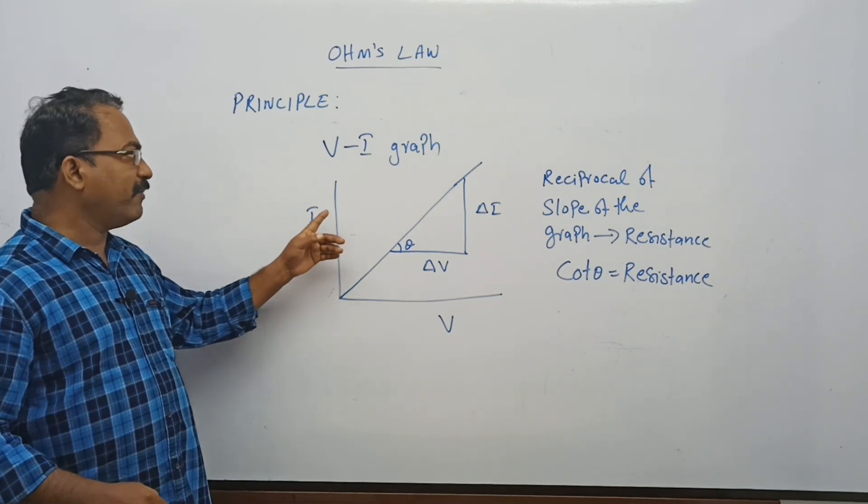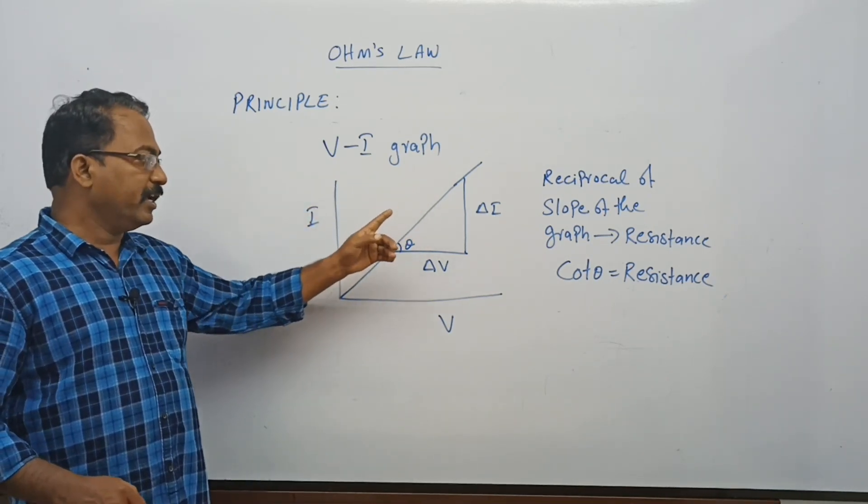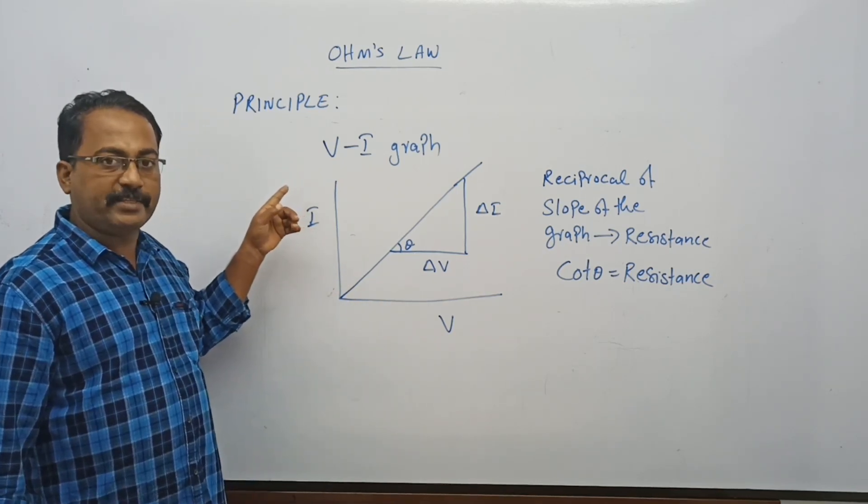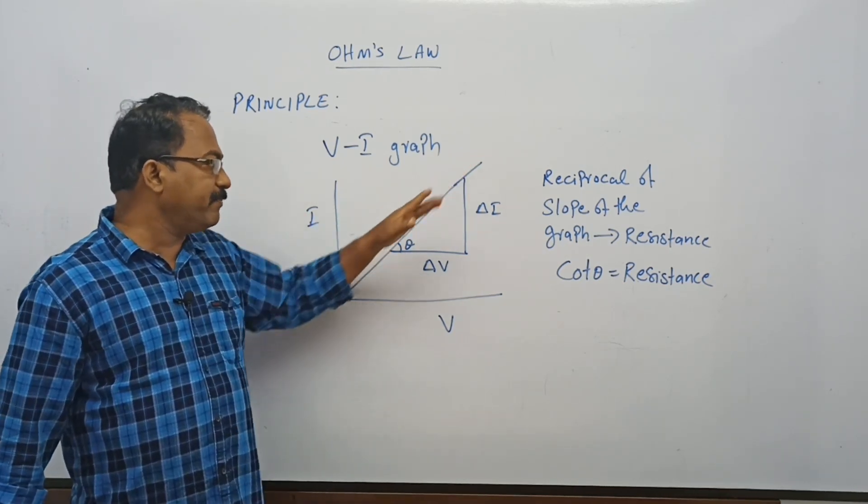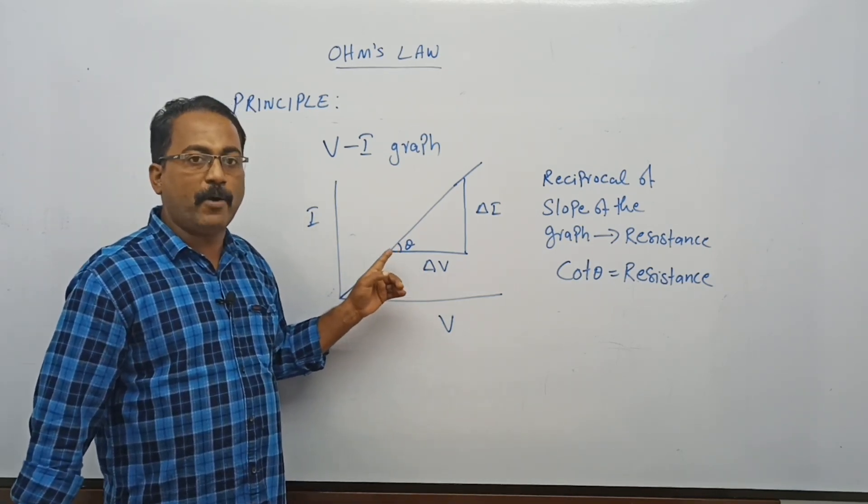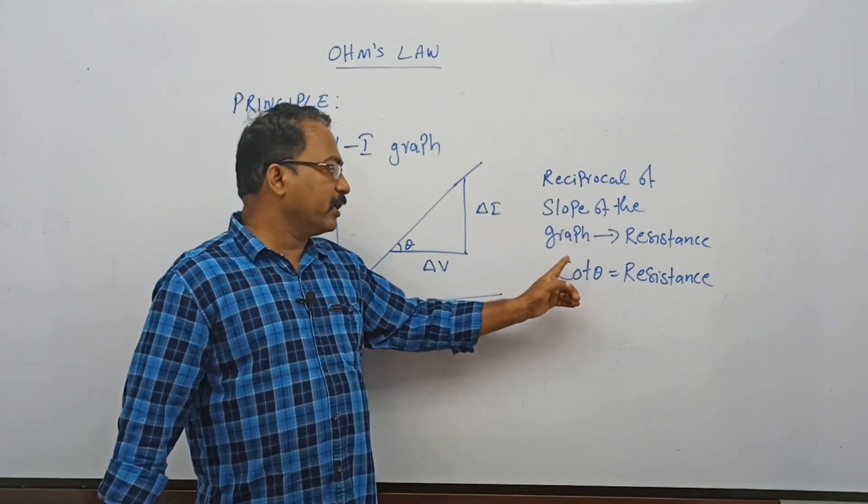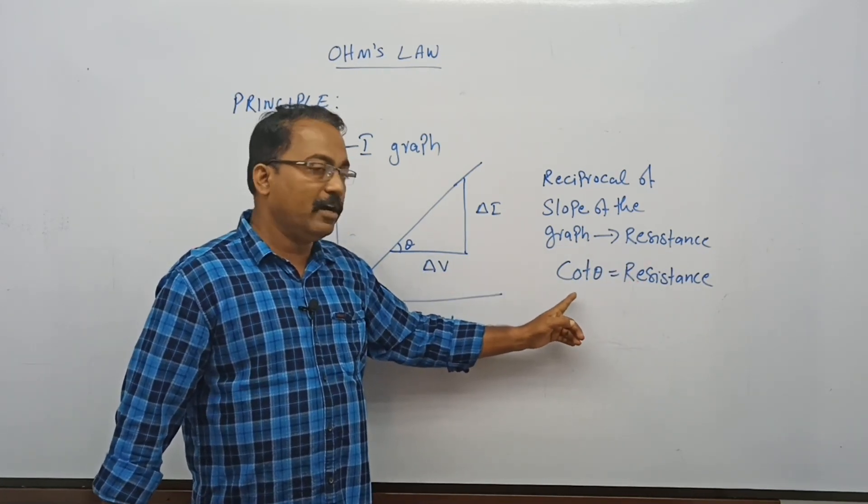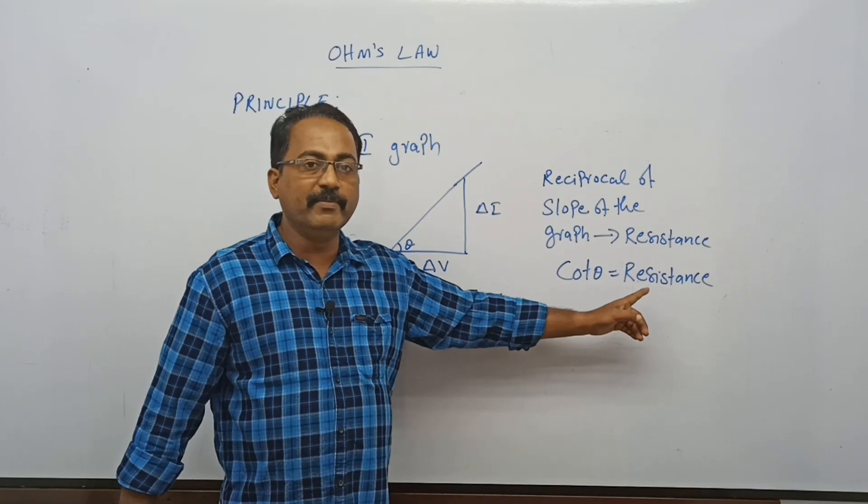We have a V-I graph in which V is plotted along x-axis and I is plotted along y-axis. The graph will be a straight line passing through the origin, and the reciprocal of the slope of the graph will give the resistance of the material. Also, cot θ equals the resistance of the material.